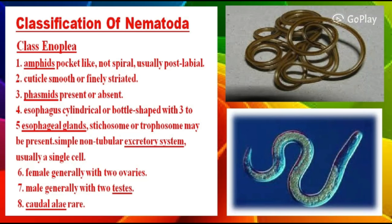Now we will discuss the first class, Enoplia. Its characteristics include: amphids that are pocket-like, not spiral, and usually post-labial. The cuticle is smooth or finely striated. Phasma is present or absent. The esophagus is cylindrical or bottle-shaped with 3–5 esophageal glands. The excretory system is simple and non-tubular, usually a single cell. Females generally have two ovaries and males generally have two testes. Caudal glands are present.